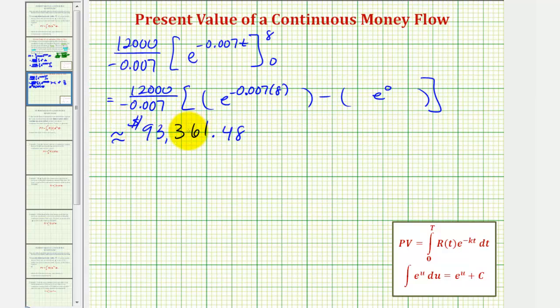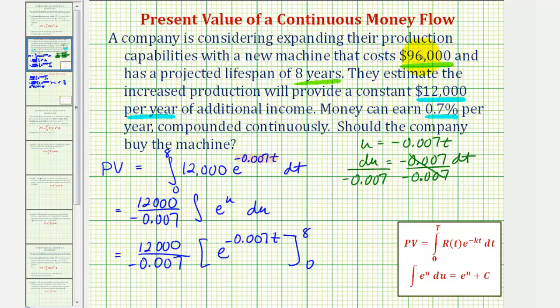So this is the present value of the expected increase in income from the purchase of the new machine. But notice how the machine costs $96,000, which is more than the present value of the increase in income. Which means the company should not purchase this machine.